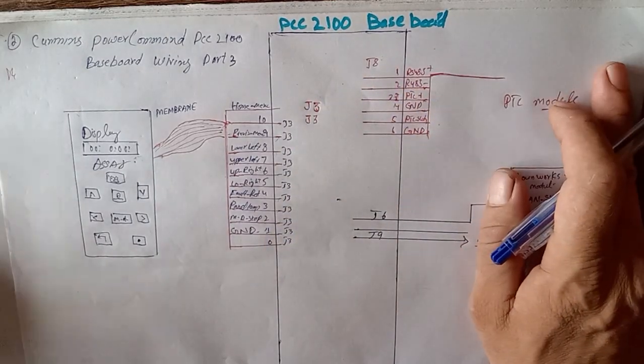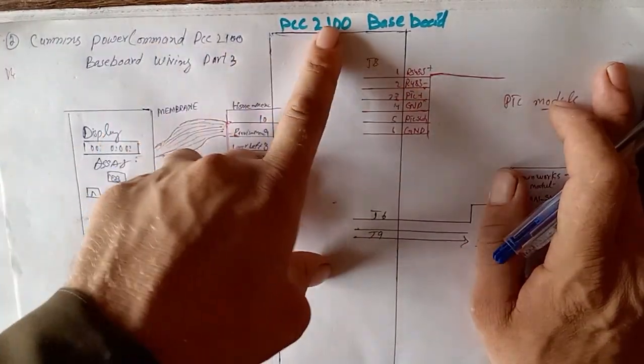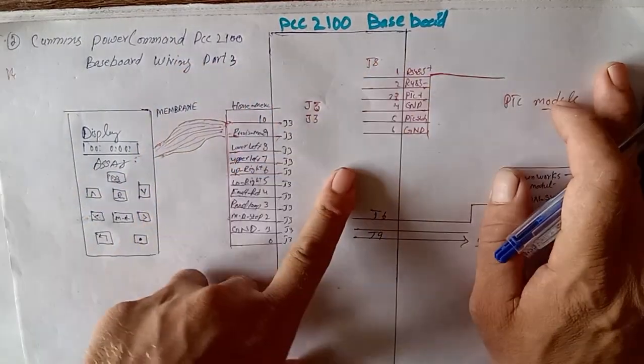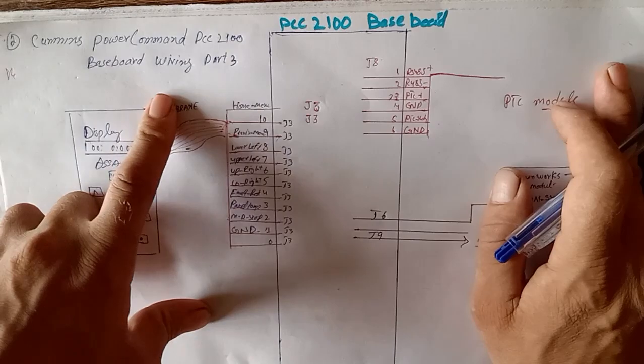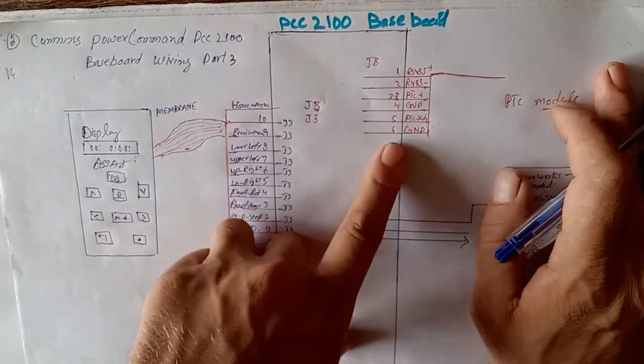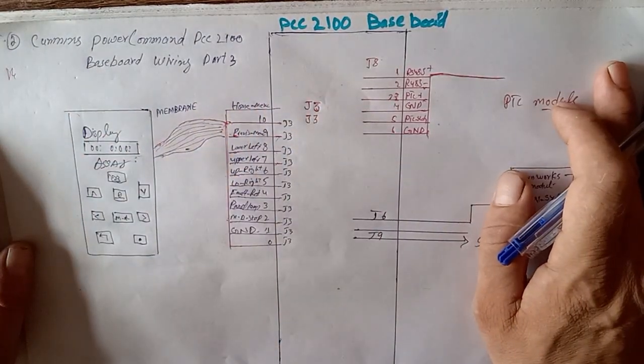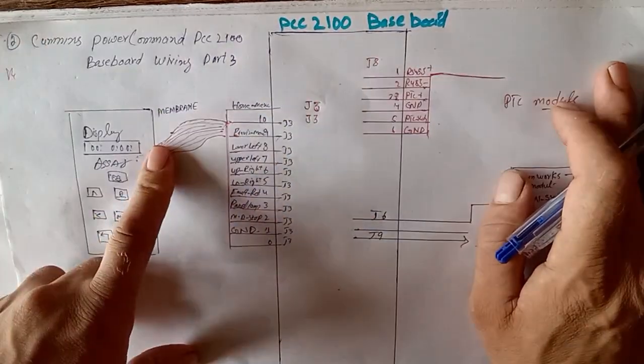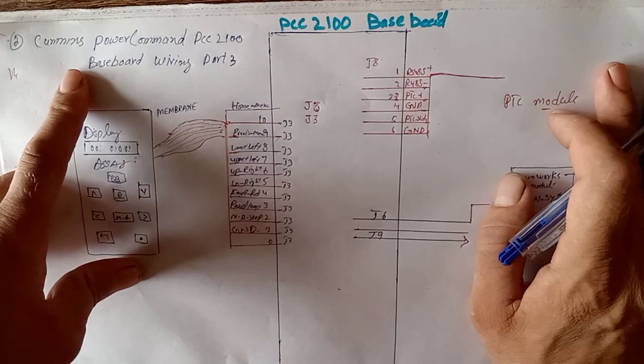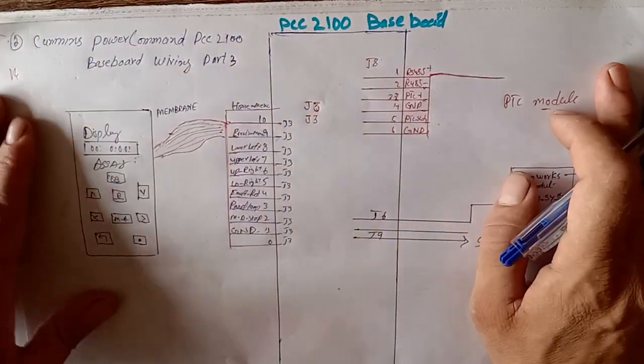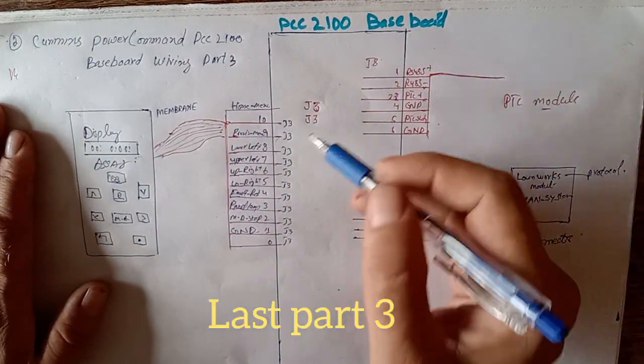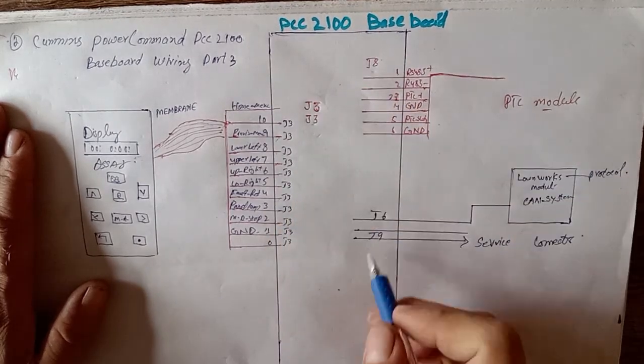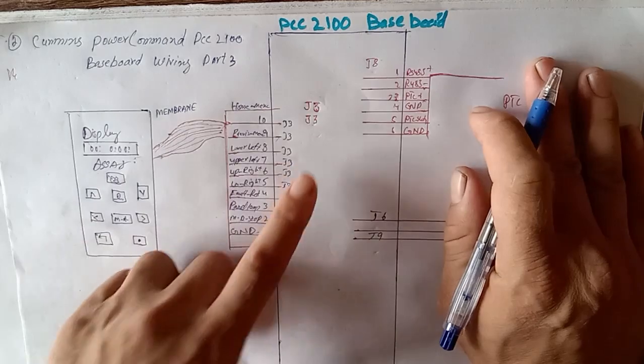Let's get started. We have three remaining connectors. The PCC 2100 series has some TV and some connectors: TV1, TV2, and also J1 to J9 connectors. We explained some connectors in part one and part two. This is the last final part. Today we are explaining the J3 connector, and also J8, J6, and J9.